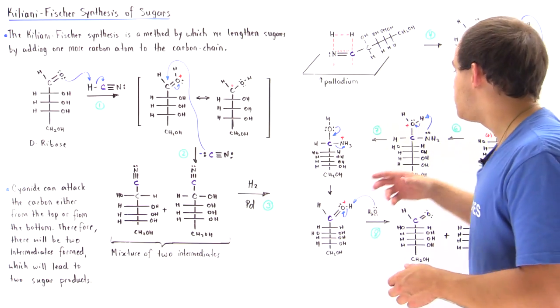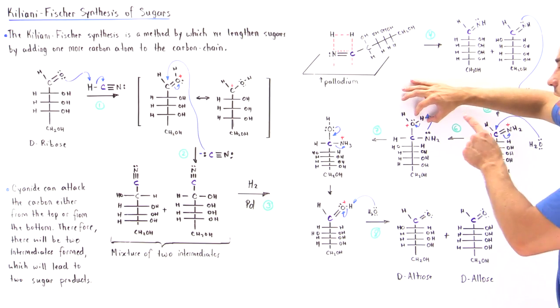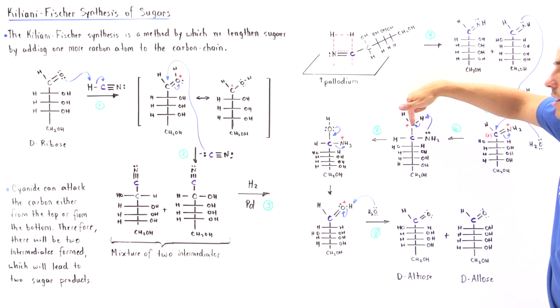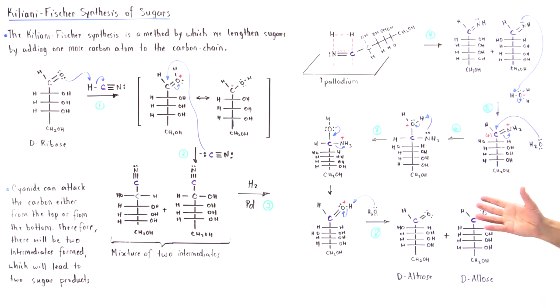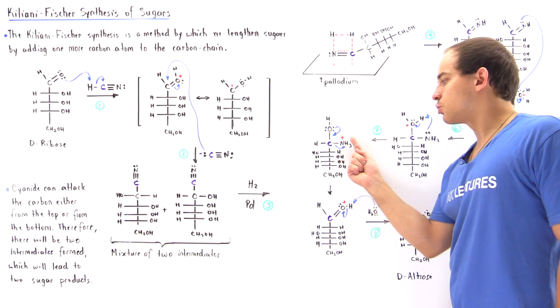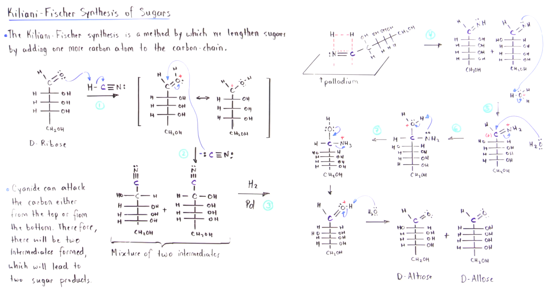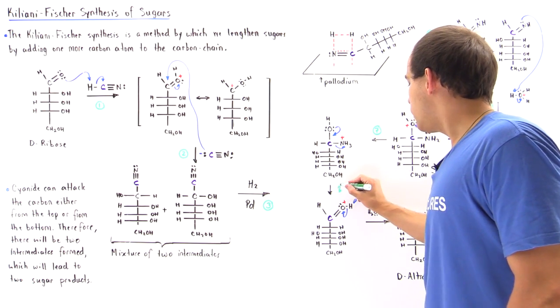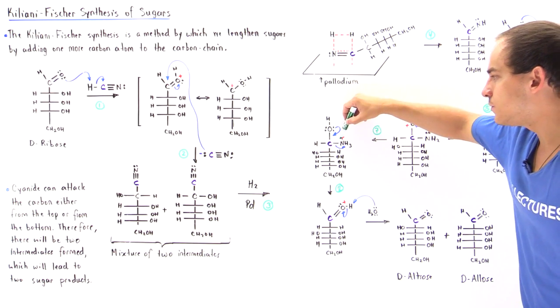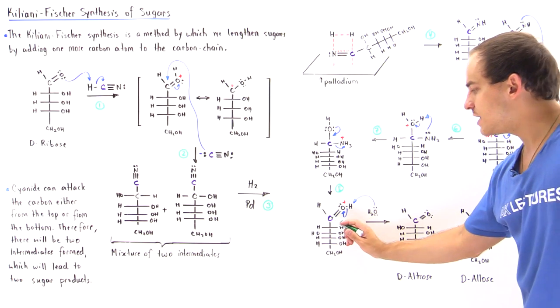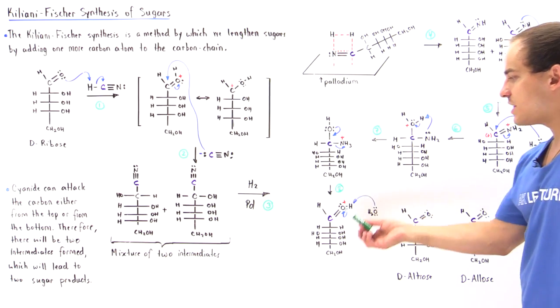Either some type of base deprotonates this nitrogen or this nitrogen that has the lone pair of electrons found in close proximity basically takes away the H and leaves our two electrons on our oxygen. We form the following intermediate in which we have this good leaving group. In step number eight, our good leaving group detaches because these two electrons form a pi bond between this oxygen and carbon. We have the ammonia that detaches and this double bond that is formed.